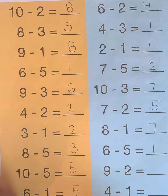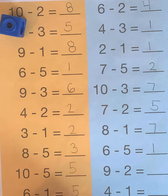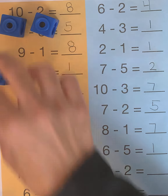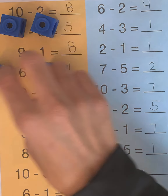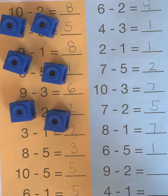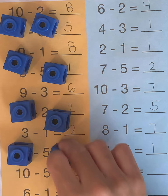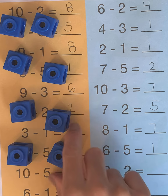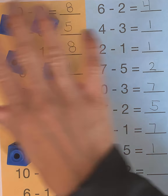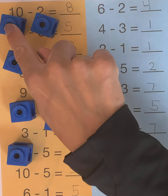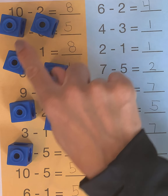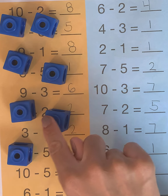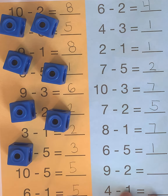9 minus 2. Let's start with 9: 1, 2, 3, 4, 5, 6, 7, 8, 9. And we are taking 2 away: 1, 2. How many are left? 1, 2, 3, 4, 5, 6, 7 are left.